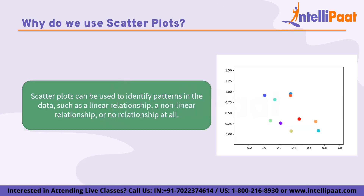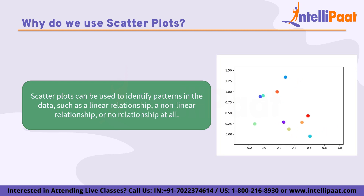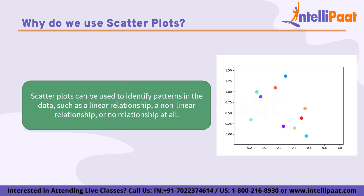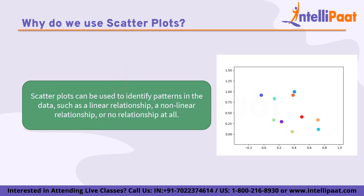Why do we use scatter plots? Scatter plots are often used in Excel to display the relationship between two numerical variables. The purpose of a scatter plot is to show how much one variable is affected by another. Scatter plots can be used to identify patterns in the data such as a linear relationship, a non-linear relationship, or no relationship at all. They can also be used to identify outliers and other unusual observations. Excel provides a variety of options for customizing scatter plots such as changing the axis labels, adding a trend line, or changing the color and size of the data points. These features make it easy to create clear and informative scatter plots.